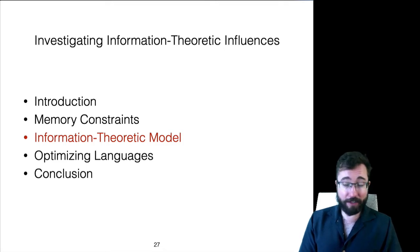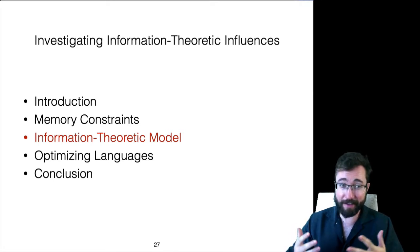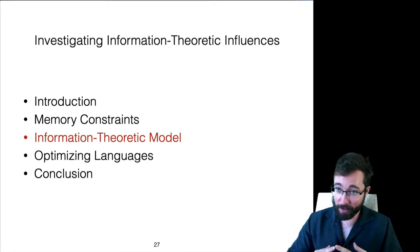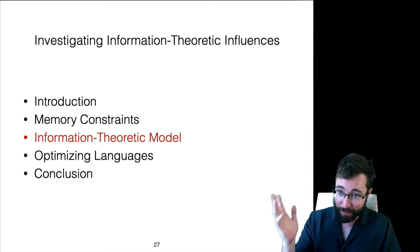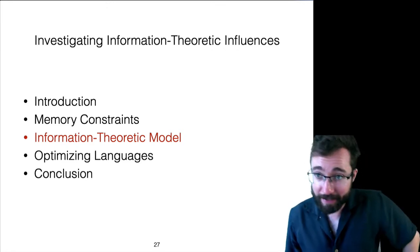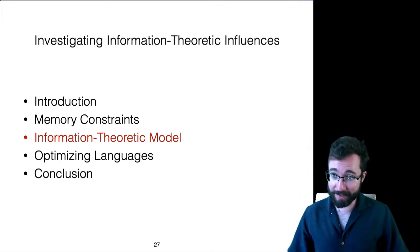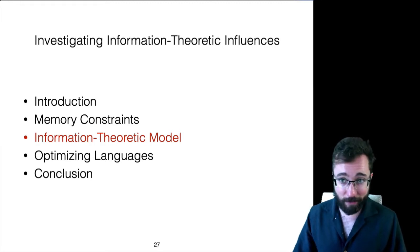Now we're going to dig into these memory constraints — what are the memory constraints that affect incremental language processing? We're going to develop an information-theoretic model of those memory constraints, which is going to explain the dependency locality effects we saw in the last section, and it's going to predict new kinds of effects in language processing and in word order under a heading that we call information locality.